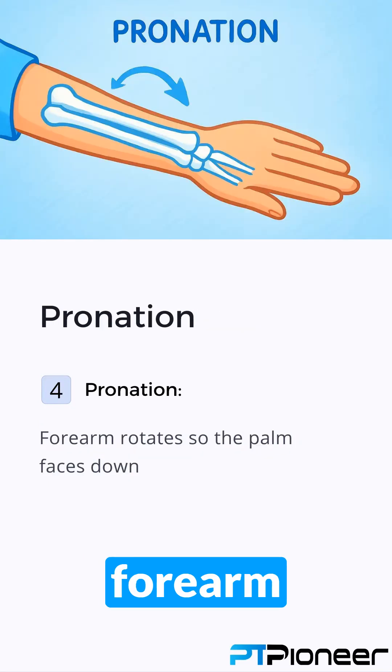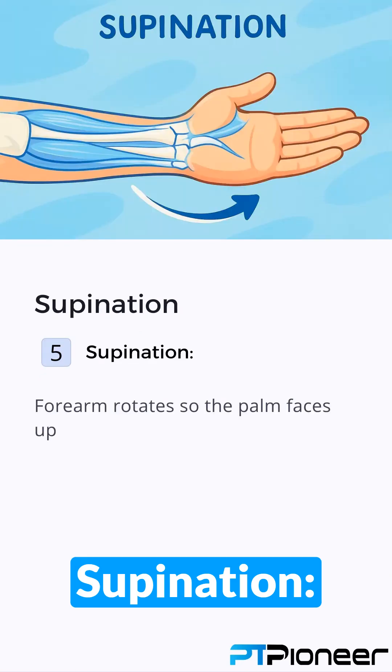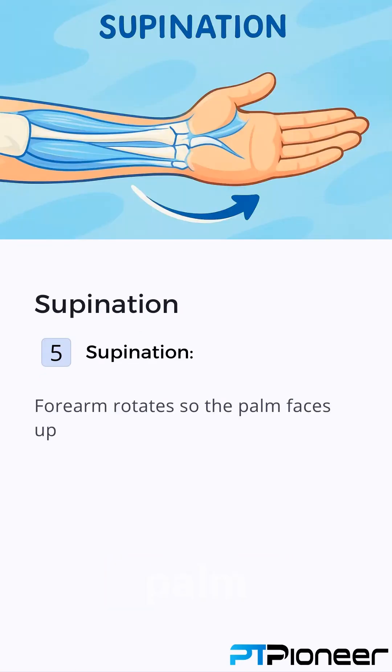Pronation — the forearm rotates so the palm faces down. Supination — the forearm rotates so the palm faces up.